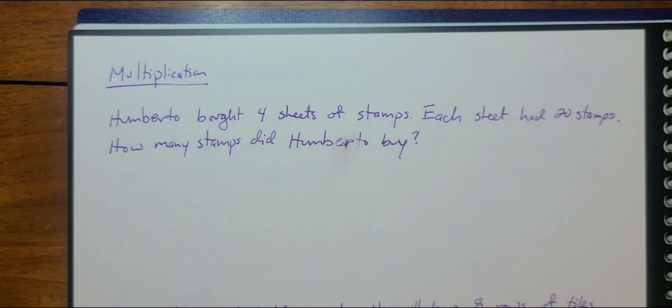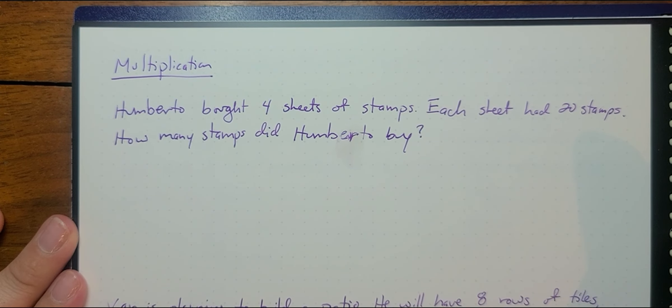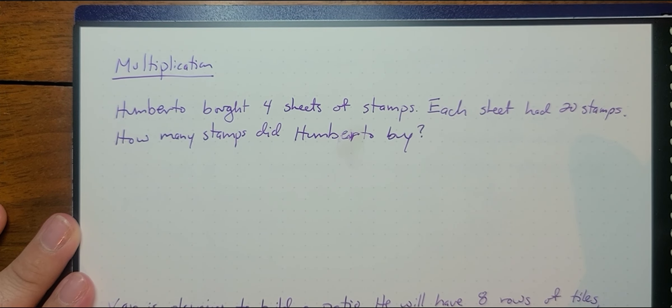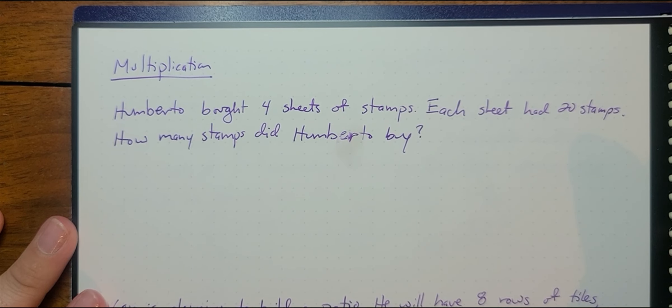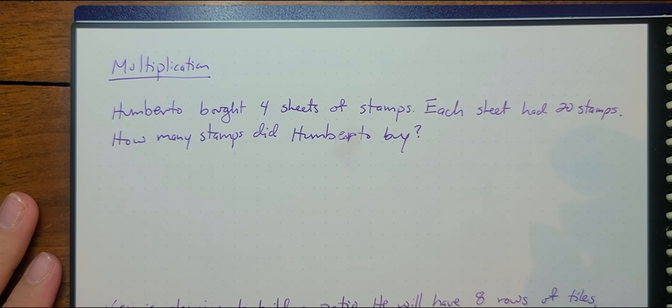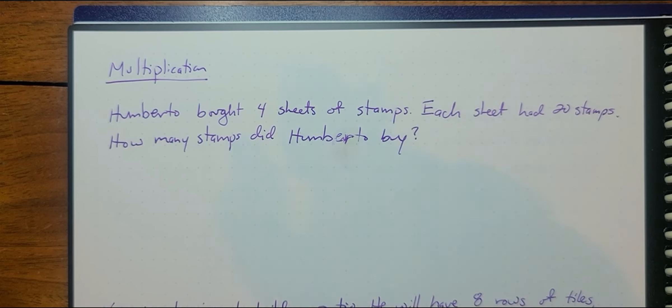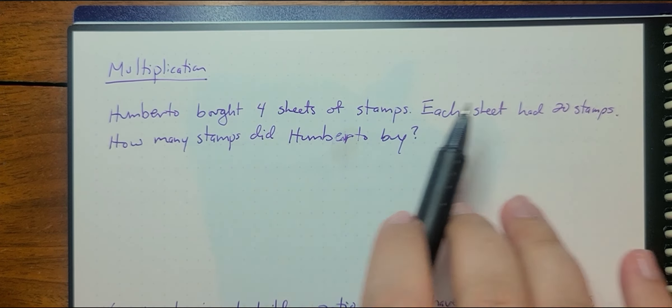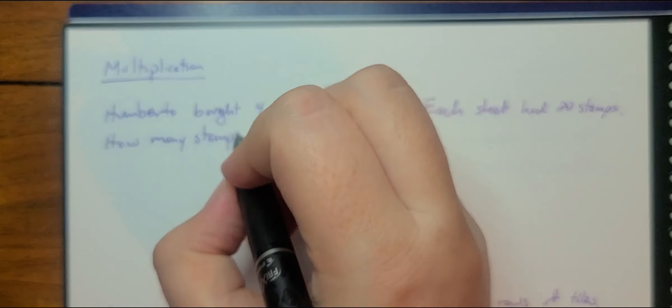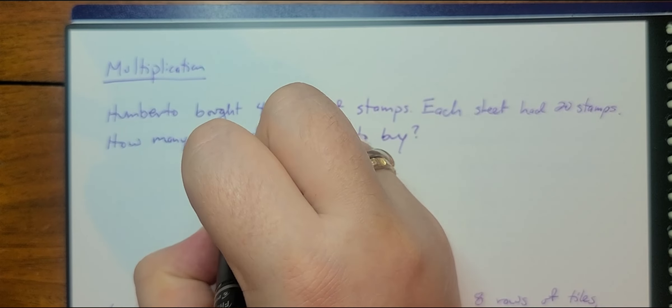We can also apply using multiplication. Humberto bought four sheets of stamps. Each sheet had 20 stamps. How many stamps did Humberto buy? So if he has 20 stamps on each sheet and he's got four sheets of stamps, we're going to take 20 times four.